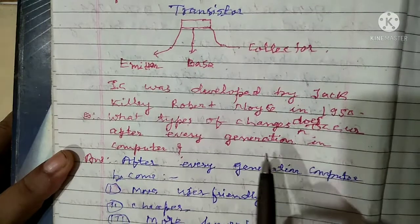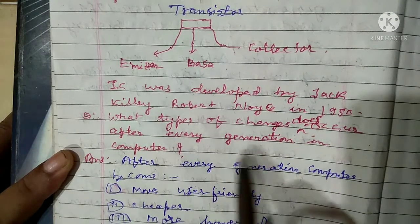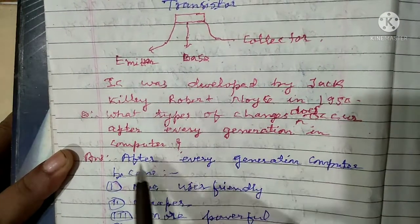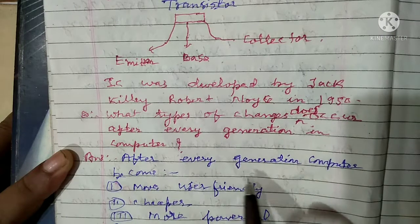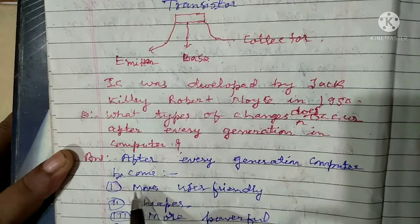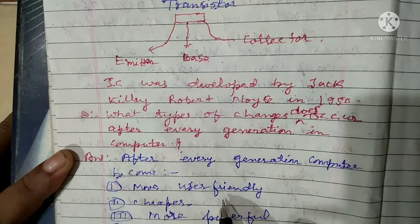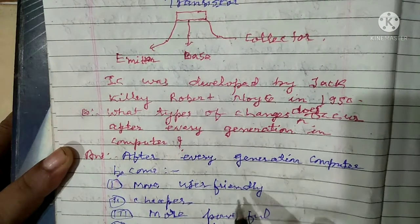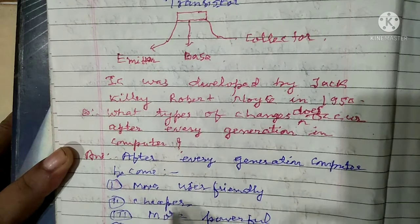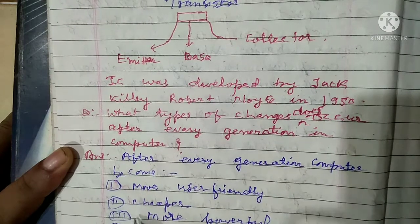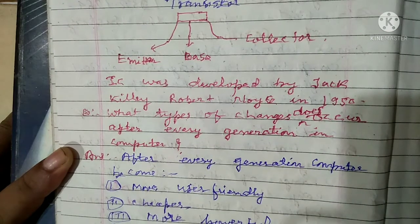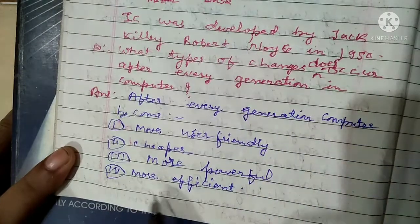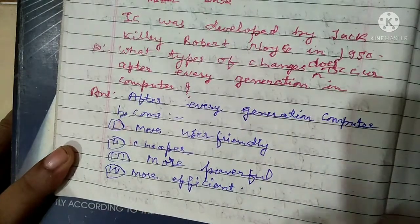What types of changes occur after every generation in computers? After every generation, the computer becomes more user-friendly, cheaper, more powerful, and more efficient.